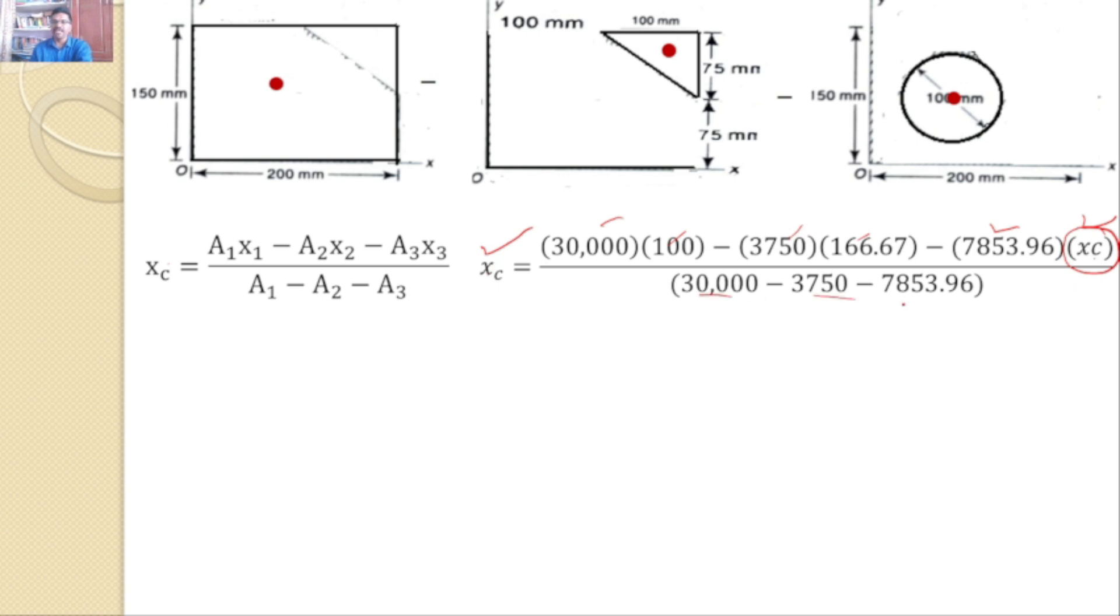Divided by A1 minus A2 minus A3. So upon simplification, after cross multiplication, you will get this value. And I can say xc, finally you will get 90.4757 mm. This is the answer for x.